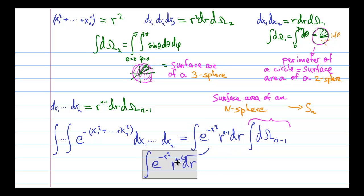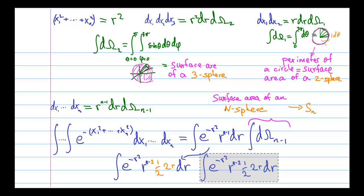And here we have e to the minus r squared r to the power n minus 1 dr. And so we can mess around with it a little bit and try to put everything in terms of r squared, using pretty simple algebra, and then use u-substitution with r squared being equal to u. And we get this integral in terms of u.